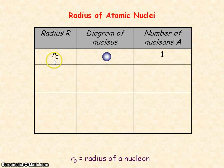If we consider a nucleus of radius R0, where R0 is the radius of the nucleon, then the nucleus only contains one nucleon.